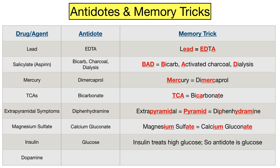Finally we have dopamine. One antidote option is phentolamine, which blocks alpha receptors. Phentolamine will counteract the effect of vasoactive agents such as dopamine, epinephrine, norepinephrine, and phenylephrine. These medications cause vasoconstriction by stimulating alpha receptors and phentolamine blocks those effects. Phentolamine can be remembered because dopamine and phentolamine both end in A-M-I-N-E.